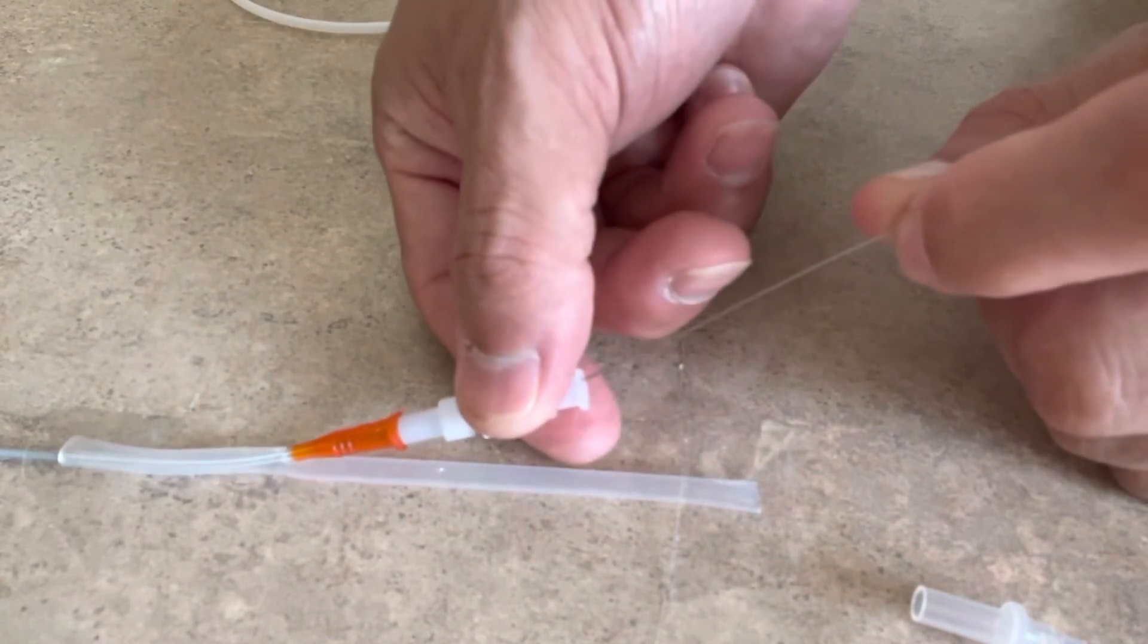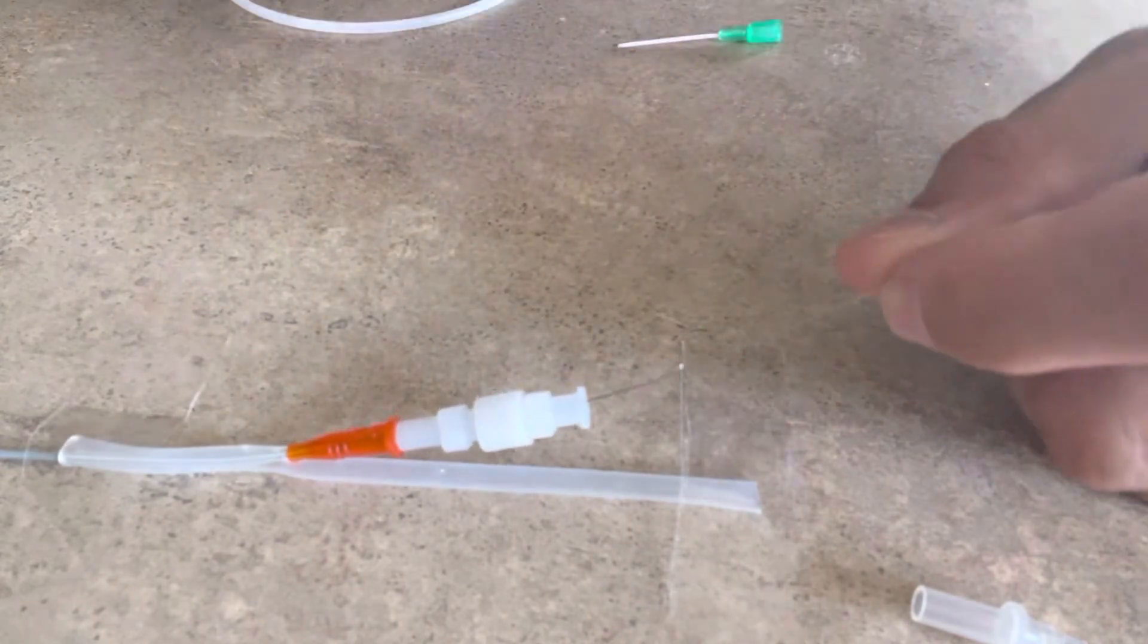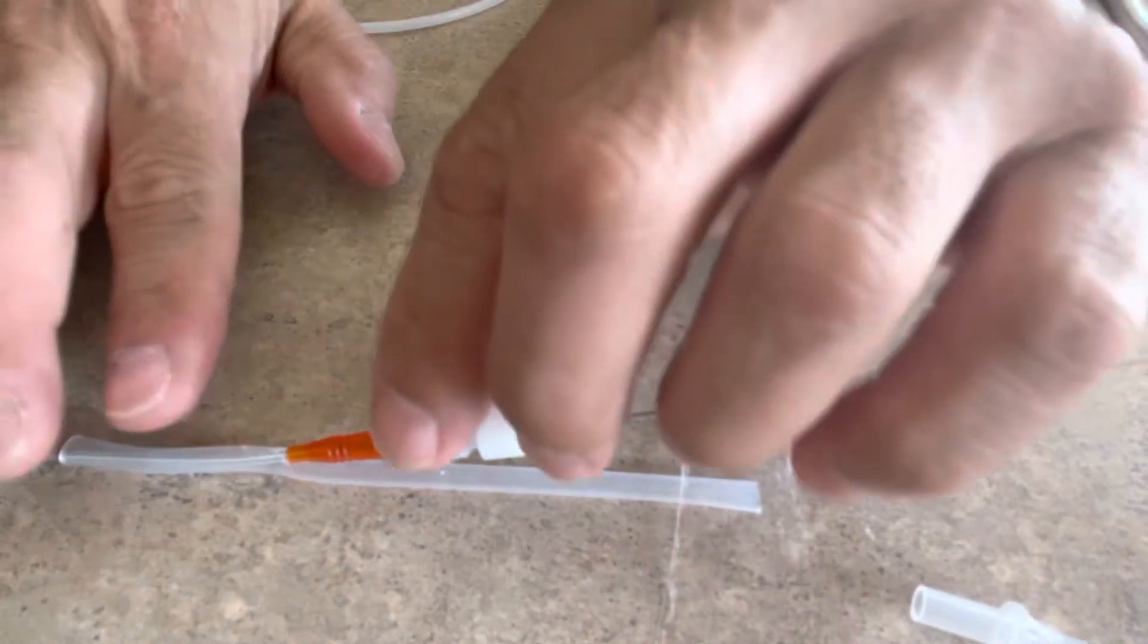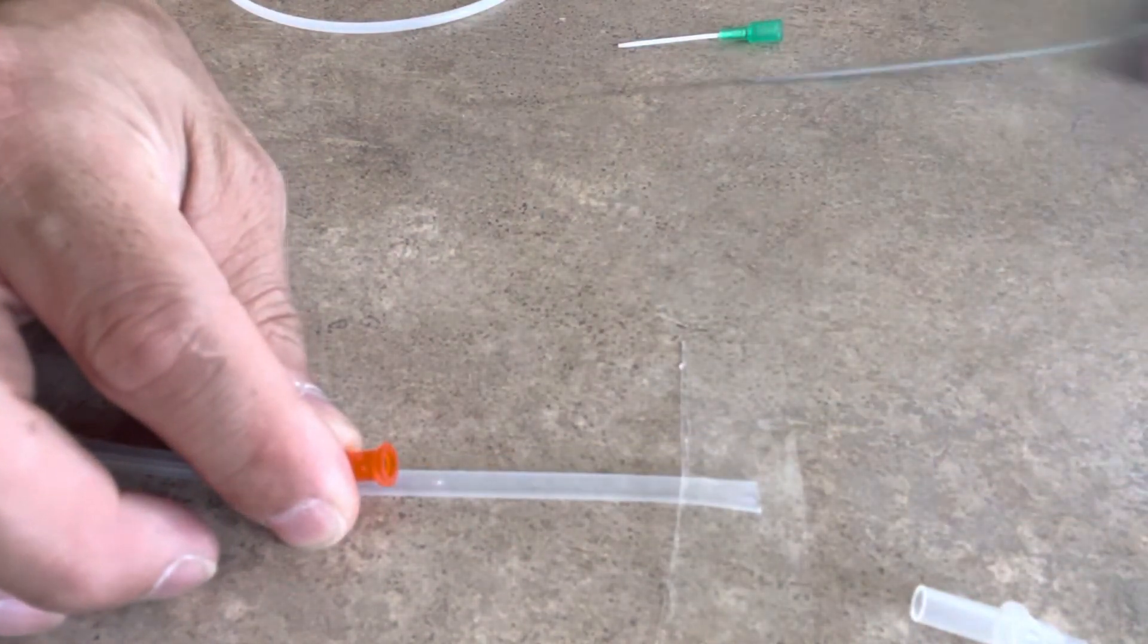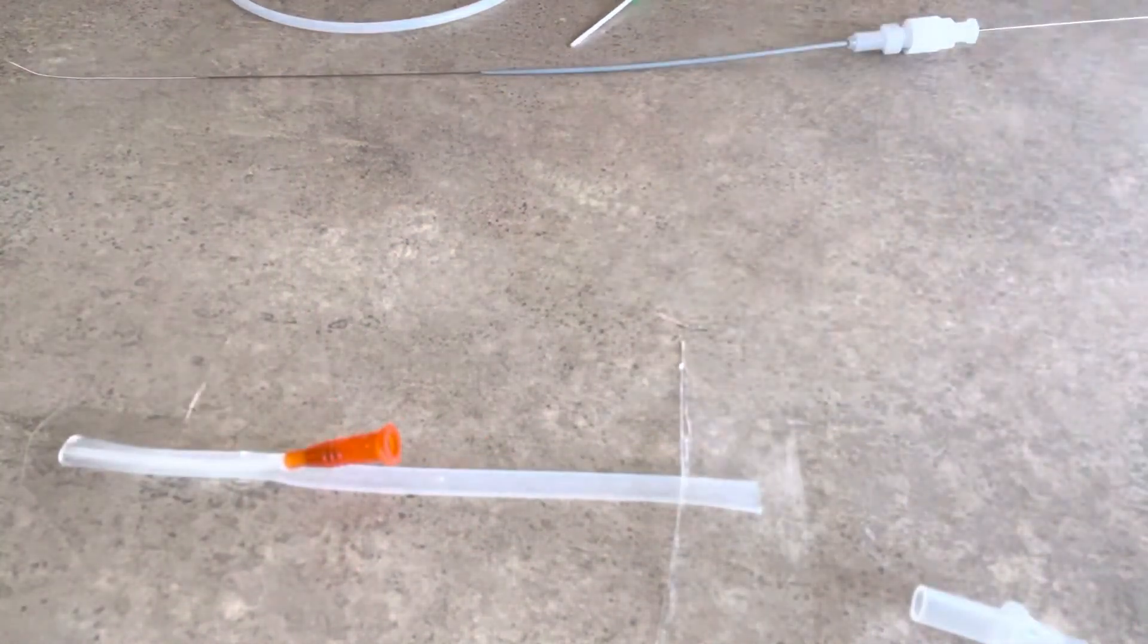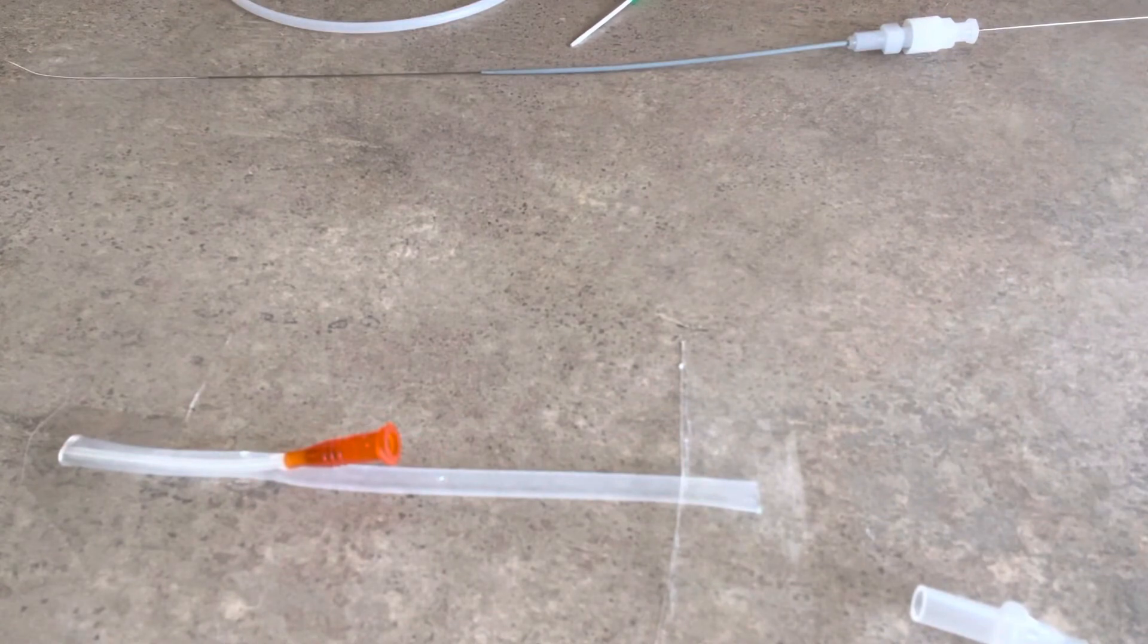Once I get there, I just advance the angiocatheter as far as it will go. After that, same old thing. I'm going to take my wire and my dilator out and now I'm left with a 14 gauge IV catheter instead of my 18 gauge peripheral IV.